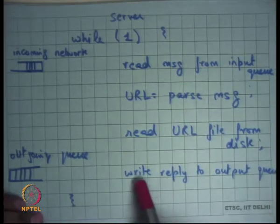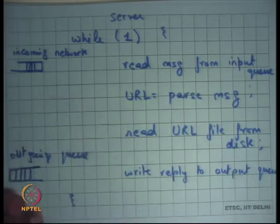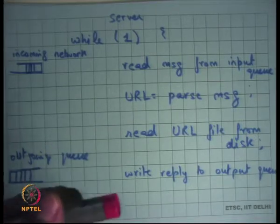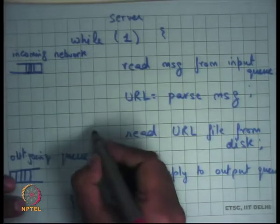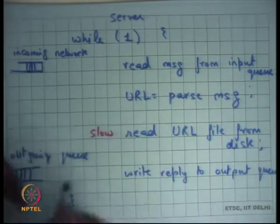Reading the URL from disk is expensive because it needs to access the magnetic disk, which is a mechanical device, as opposed to all the other steps which are electronic. Writing the reply to the output queue is fast. Reading from disk is by far the slowest step.